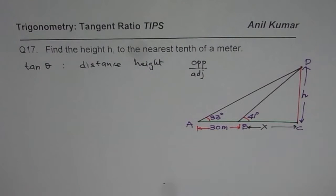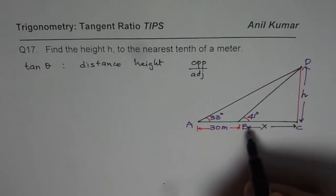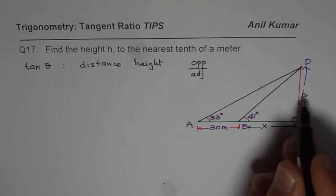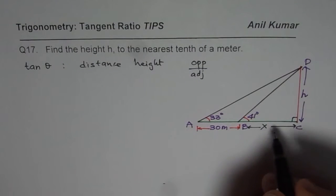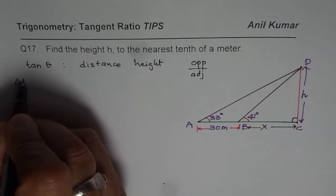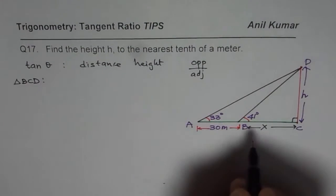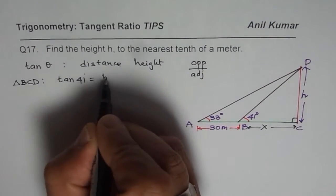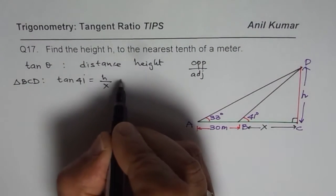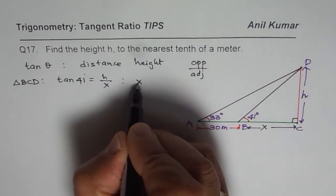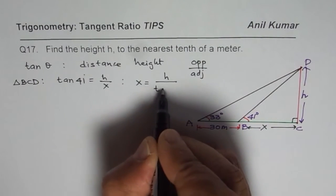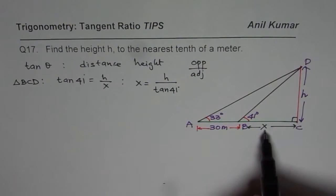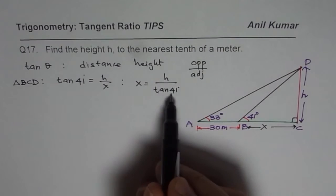How can we do it? We will begin by the triangle BCD. In triangle BCD we know DC is right angle, so we can relate X with the height. Let us take triangle BCD: tan 41° = h/x. From here we can write x = h/tan 41°. So we get a relation between h and x.